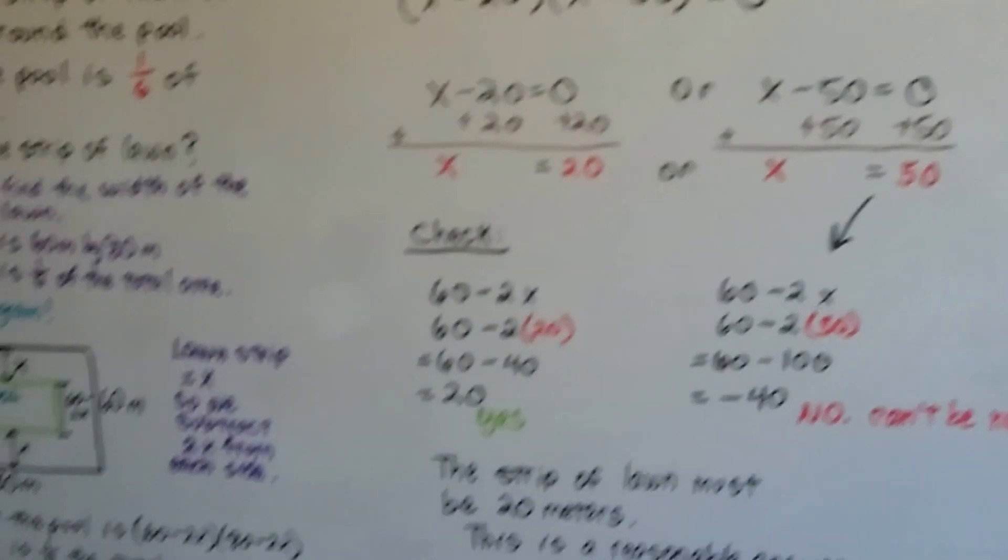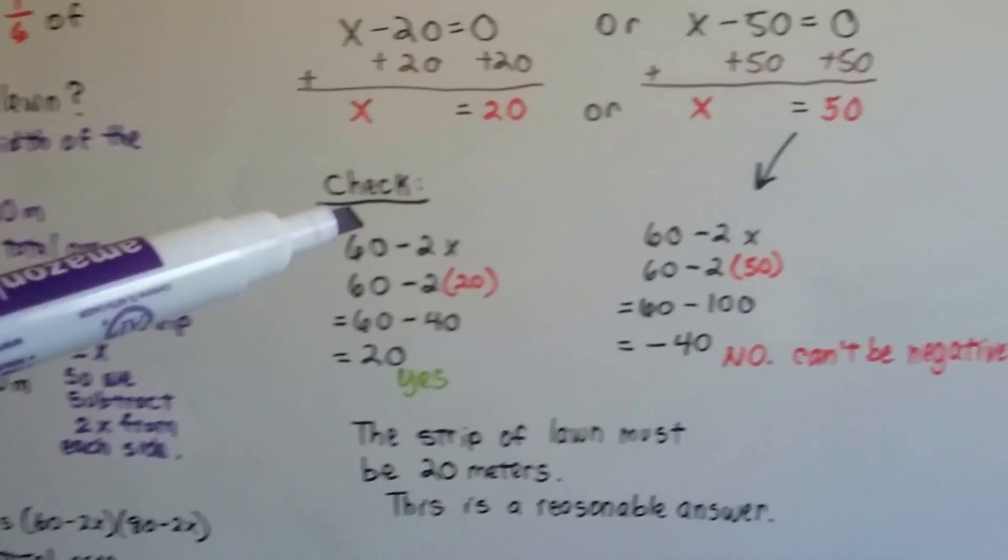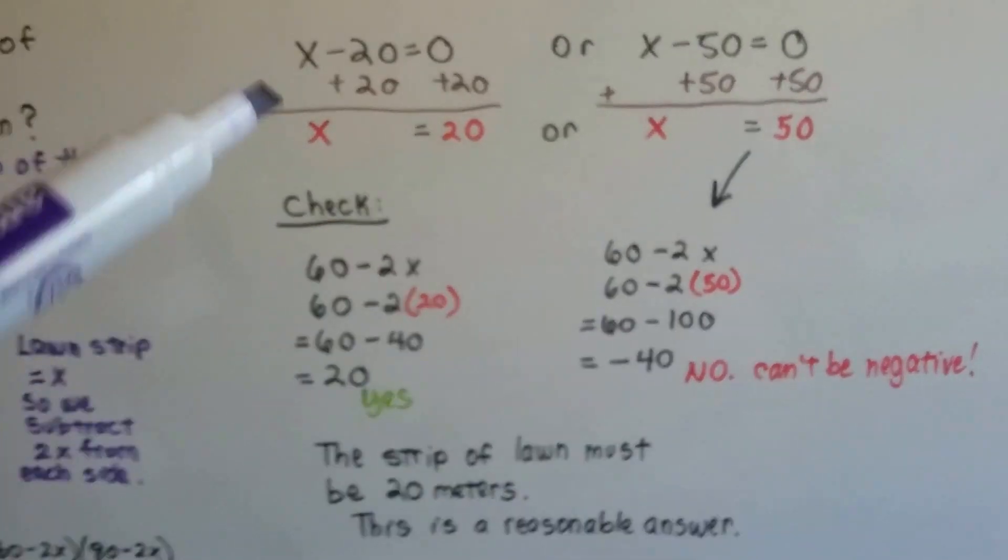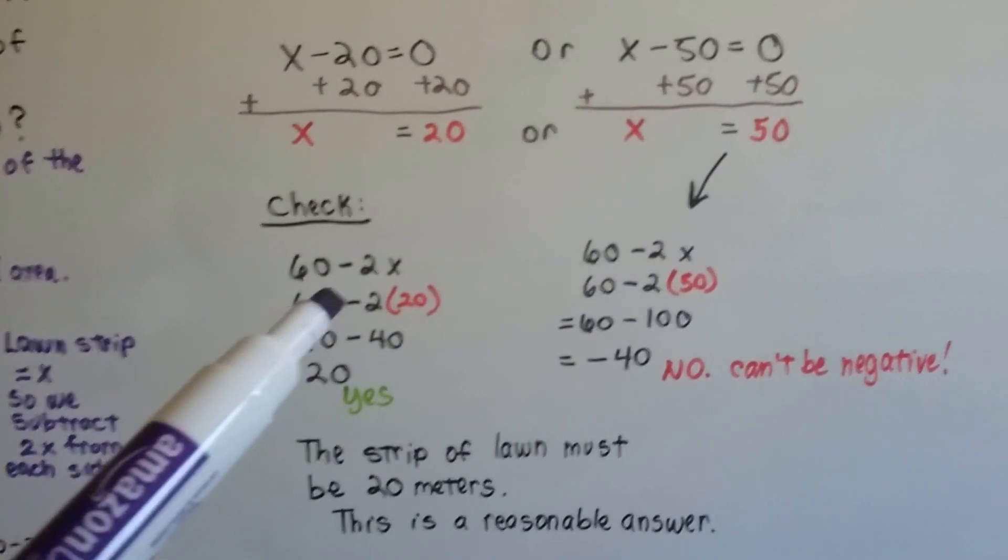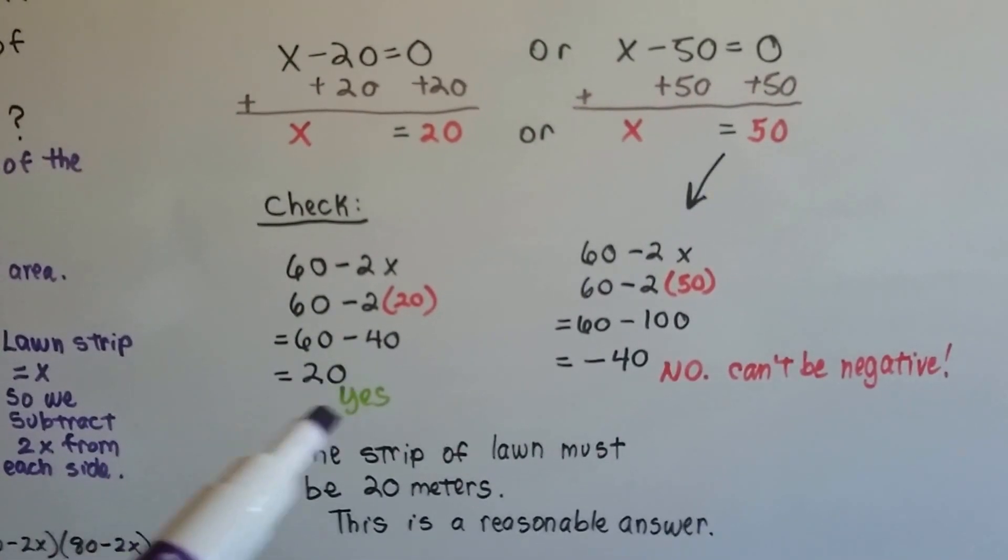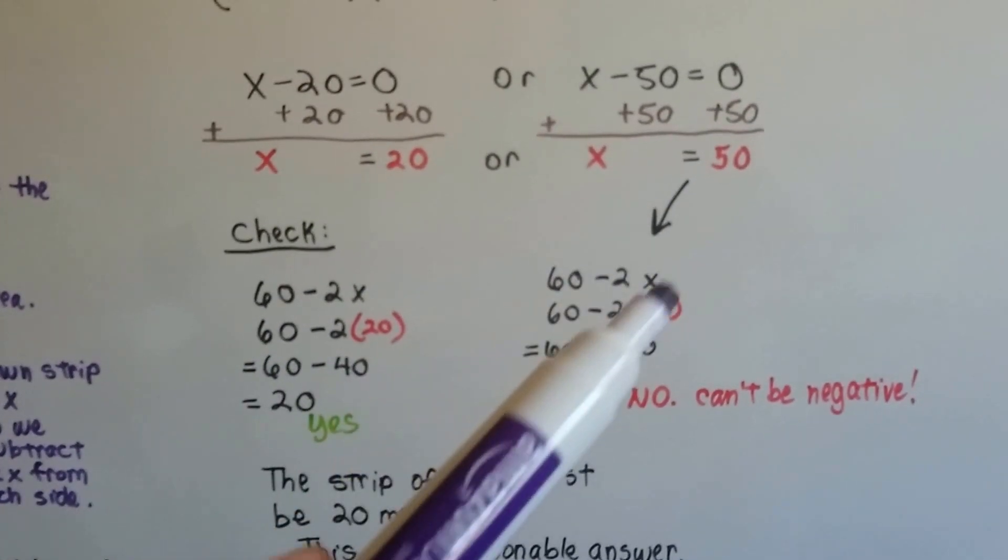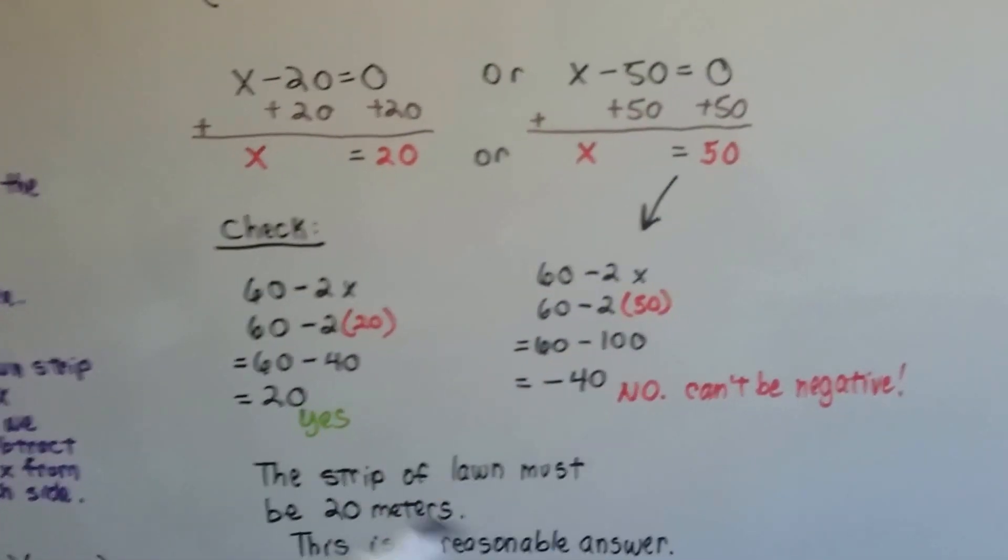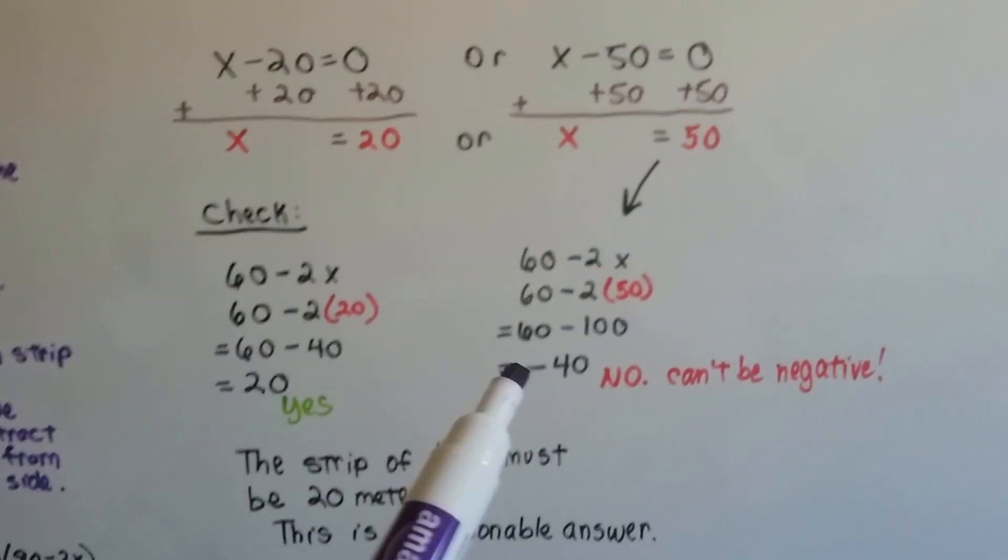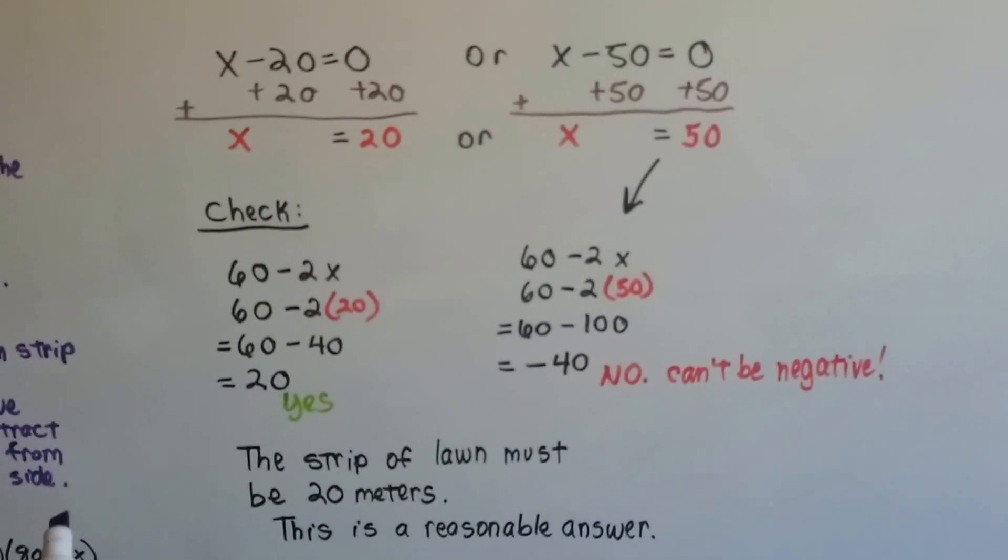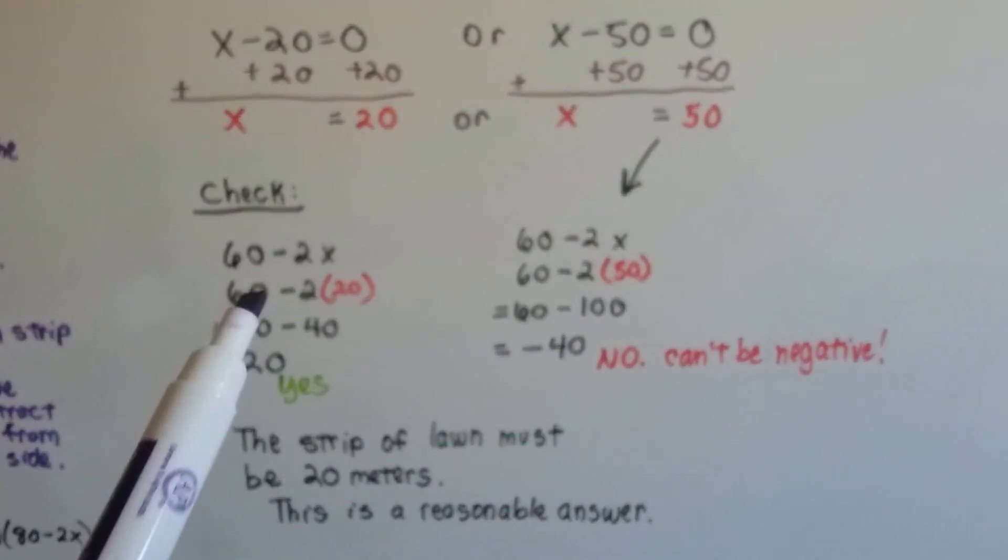Now we can plug this into one of these values to see if it works. If we do 60 minus 2x and use 20 for x, we get 60 minus 40. That means it would be 20 meters. That could work. When we do 60 minus 2x, if x is 50, we get 60 minus 100, which is negative 40. You can't have negative 40 as a measurement. So that's not an answer.